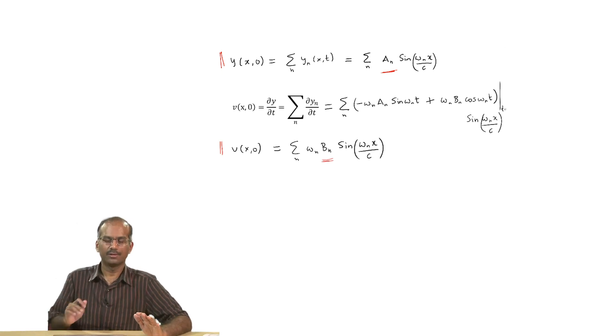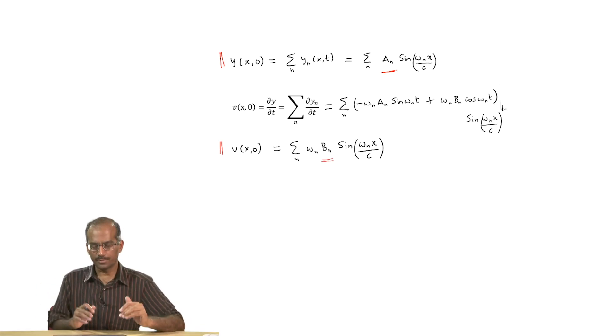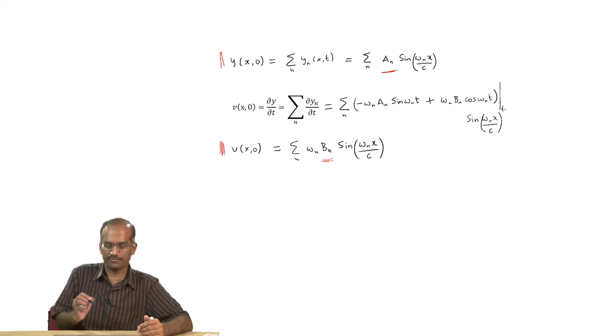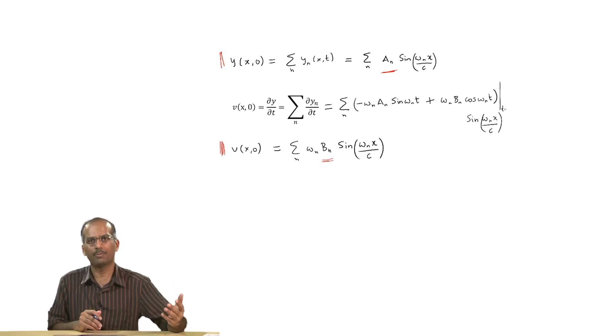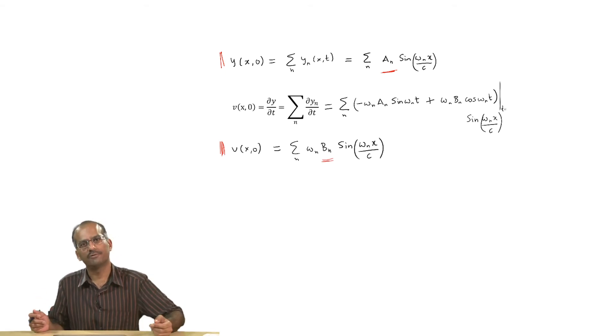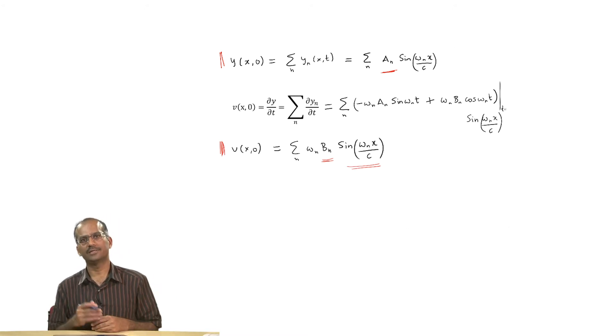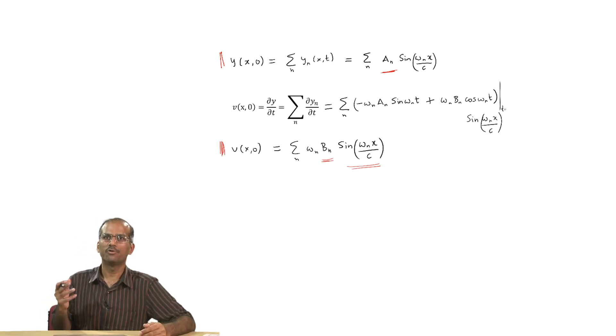The displacement at initial time depends on this quantity a and the velocity at initial time depends on this quantity b. For a moment imagine that y(x,0) is some arbitrary function of x. Then what you have on right hand side is an infinite series in terms of sin(omega_n x/c). That should remind you of Fourier series. Similarly, if you look at v as a function of x,0, again just for a moment if you imagine that this is some arbitrary function, this entire expression looks like a Fourier series. We know how to extract these coefficients a_n and b_n because they will precisely turn out to be the Fourier coefficients.